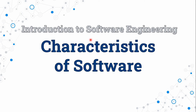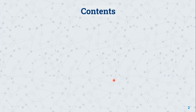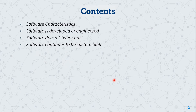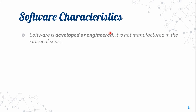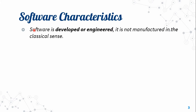Today's topic is the Introduction to Software Engineering and Characteristics of Software. The first stage we will see is the Software Characteristics. Software is Developed or Engineered, Software doesn't wear out, and Software continues to be custom built.